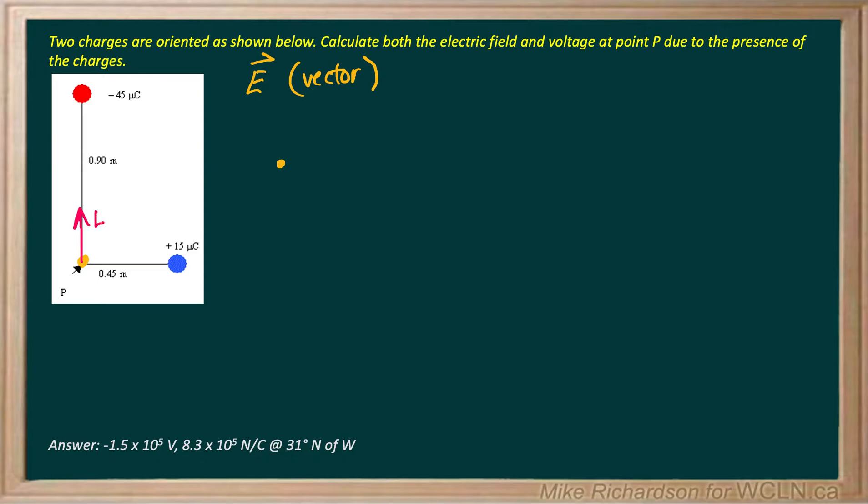Now there's also an electric field that has to do with this 15 microcoulomb charge and it always goes directly away from a positive charge. So when we start at point P there's also E2 directly to the left.